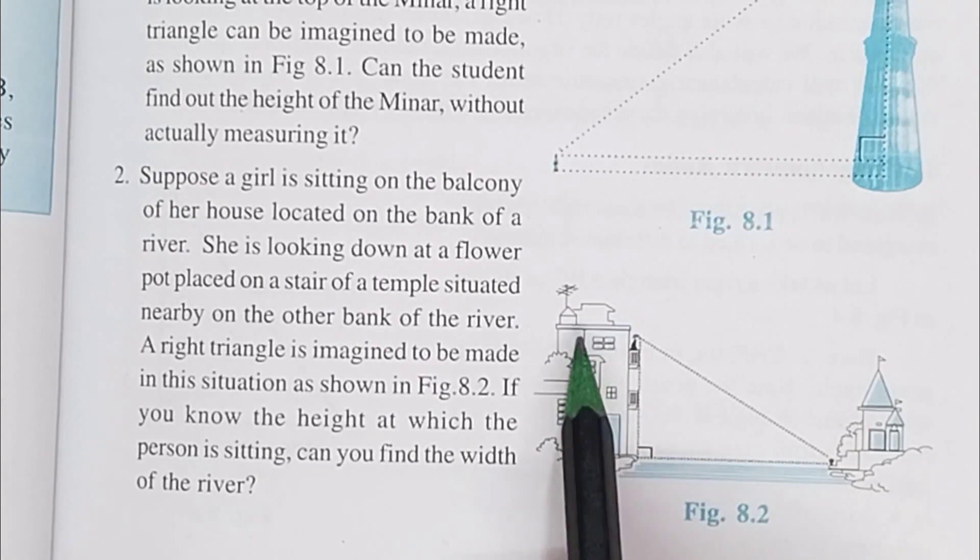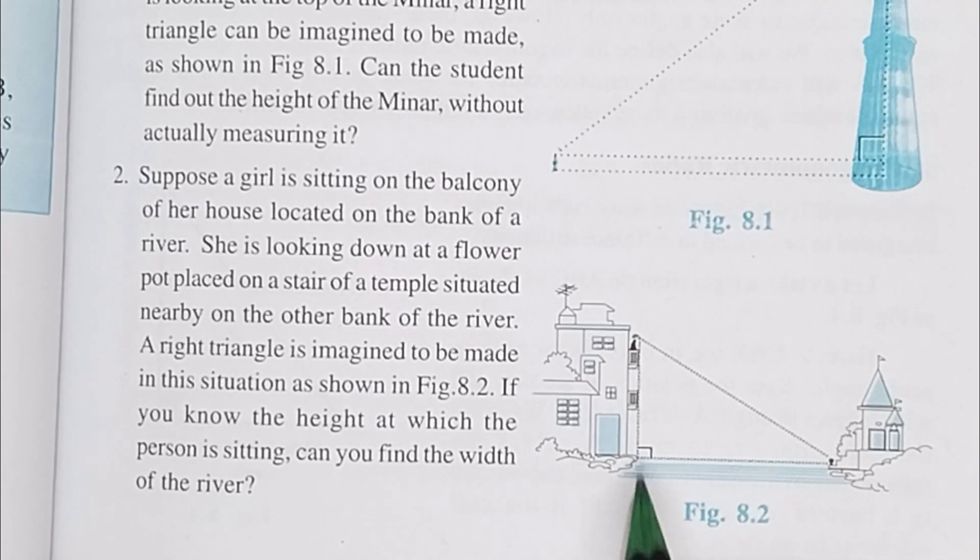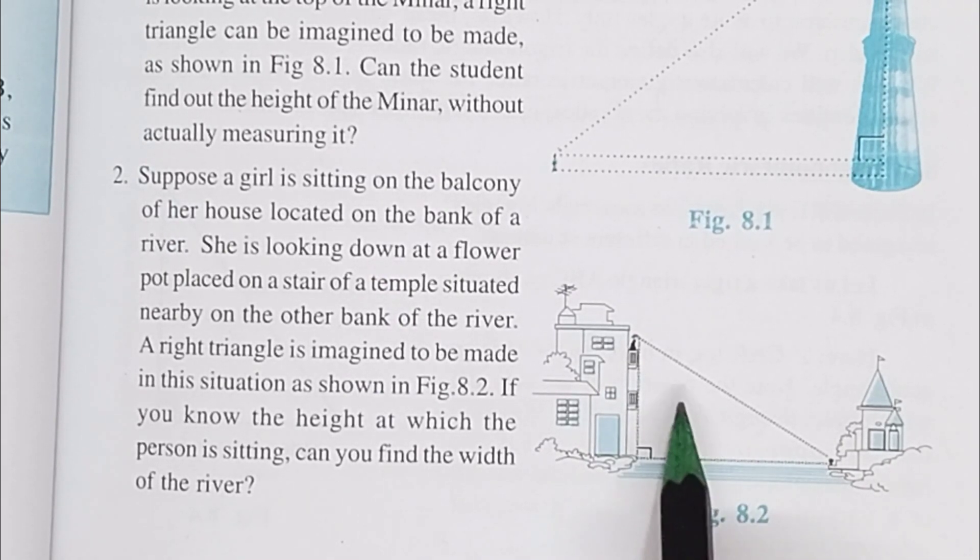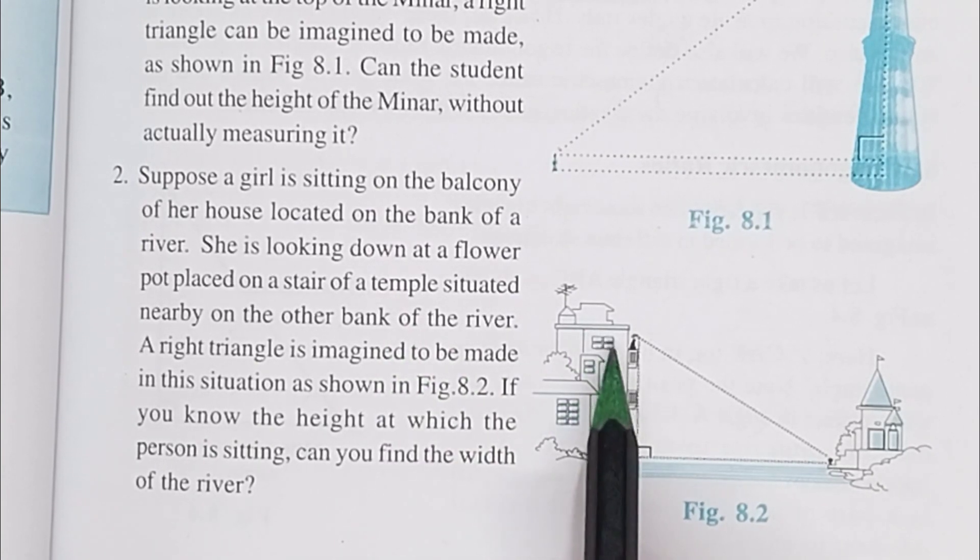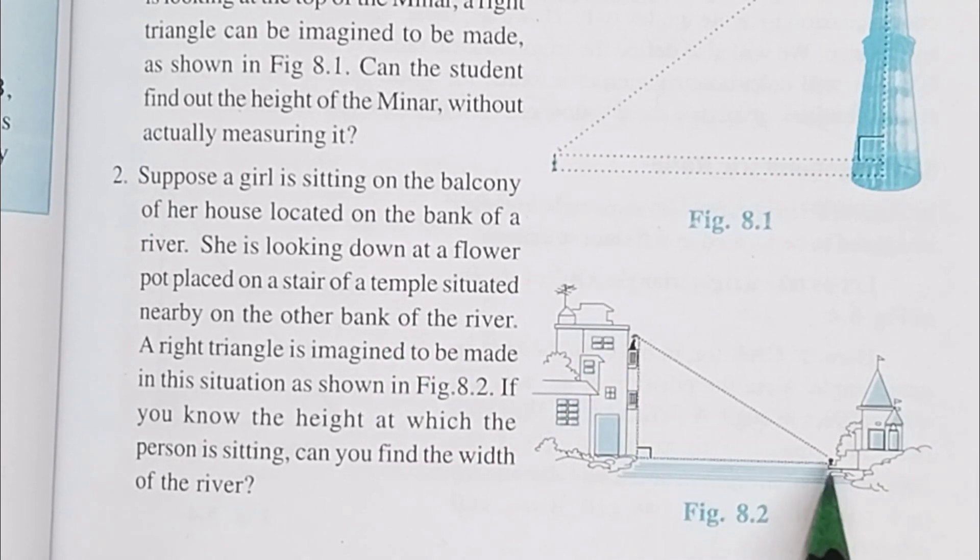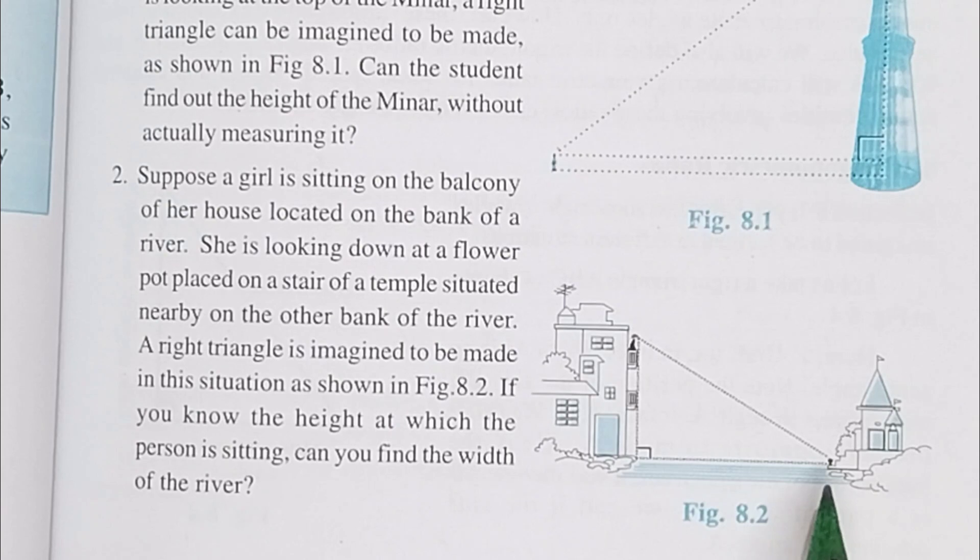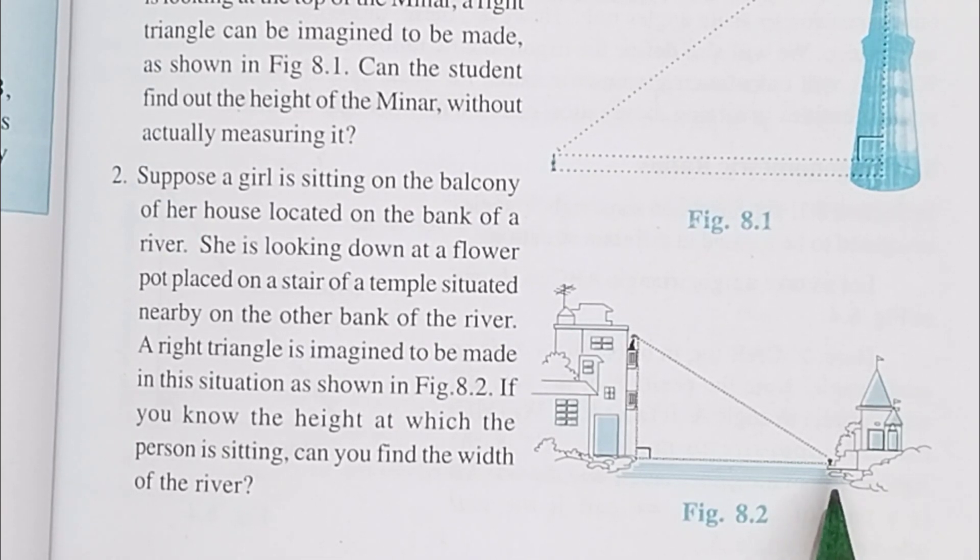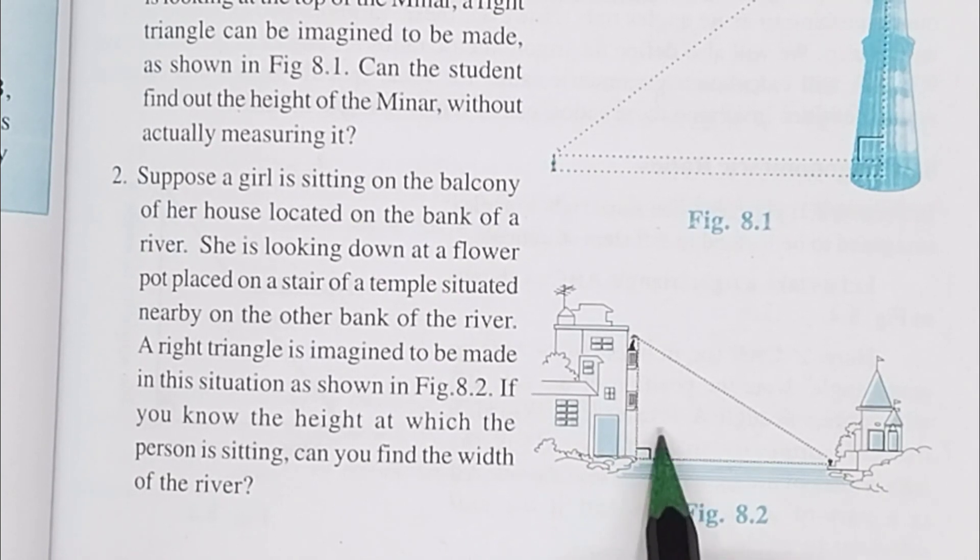A girl is sitting in the balcony of a house located on the bank of a river, and she is looking down. Here you can see she is looking down at a flower pot placed on a stair of a temple situated nearby on the other bank of the river. So what is going on? Here also a right angled triangle is formed.